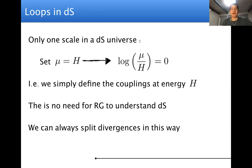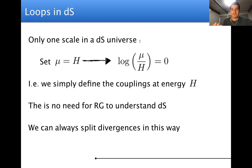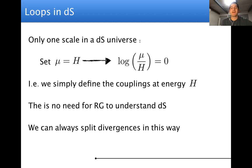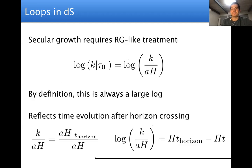Dealing with the log(mu/H) divergences is simple: you just set mu equal to H. Then all these logs are zero. This isn't a cheat — there's really only one energy scale in de Sitter, the Hubble scale H. Vacuum correlators in de Sitter don't allow us to choose initial conditions, so we don't have a free energy parameter E. We just fix all couplings at the scale H, and then there's no need to do RG at all because there's only one scale.